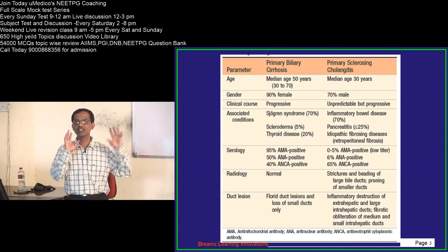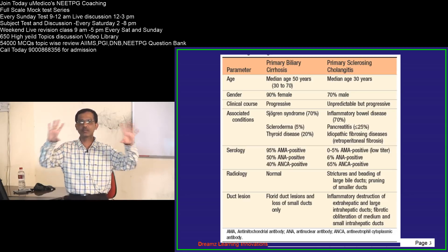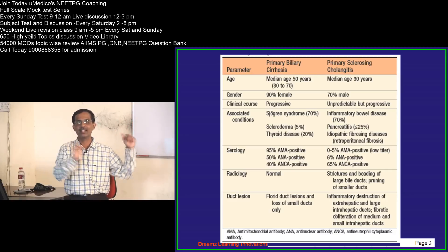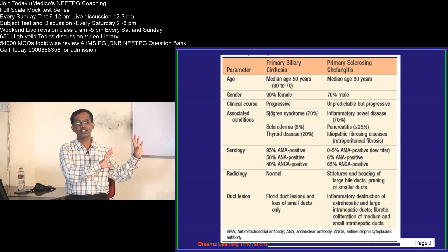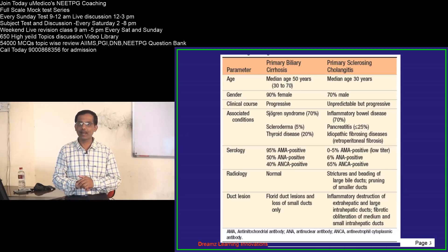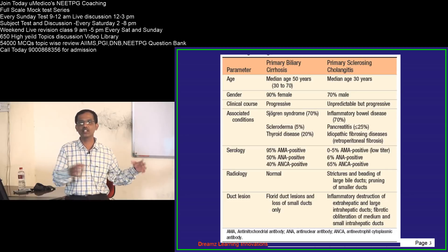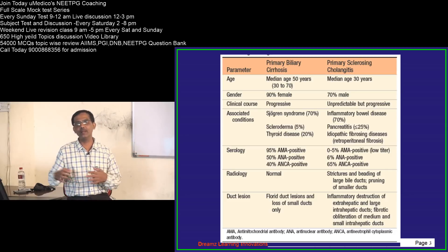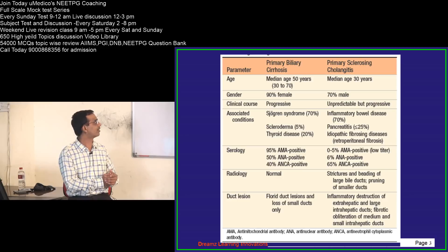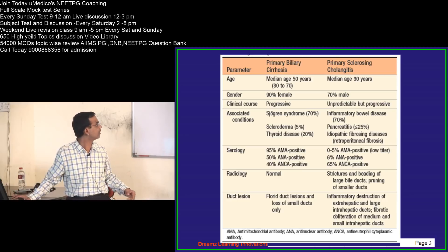Whenever the word PBC comes — primary biliary cirrhosis — just remember a lady who has attained menopause has every chance of developing this. Whereas PSC, primary sclerosing cholangitis, is the disease of an active male in his 30s and 40s. It is more common in males, with a median age of 30 years.